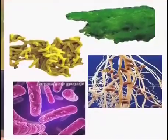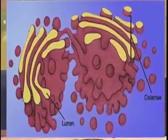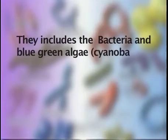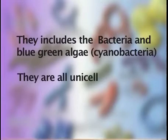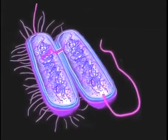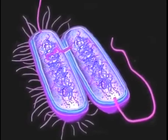Eubacteria include all the microscopic organisms. They are prokaryotes, meaning cell organelles such as mitochondria, Golgi apparatus, and endoplasmic reticulum are absent in them, and they do not have a well-defined nucleus. They include the bacteria and blue-green algae. The blue-green algae are now known as cyanobacteria. They are all unicellular organisms. So, the moment we say prokaryotic unicellular organism, it should immediately bring to mind that we are talking about bacteria and cyanobacteria — that is, Kingdom Monera and the eubacteria.